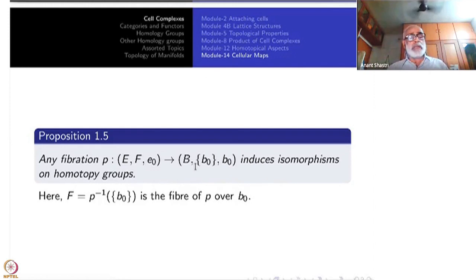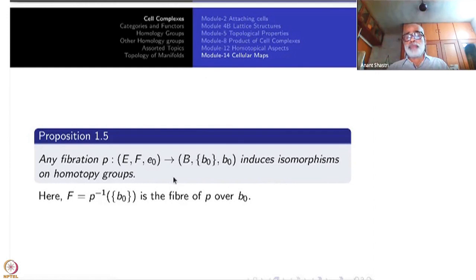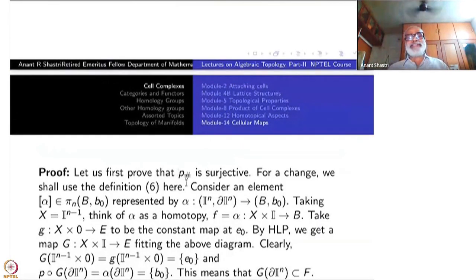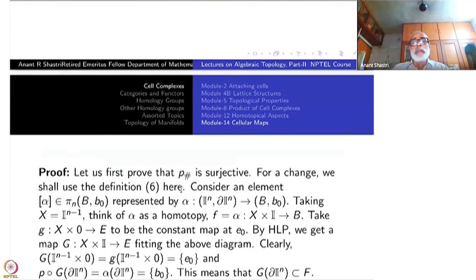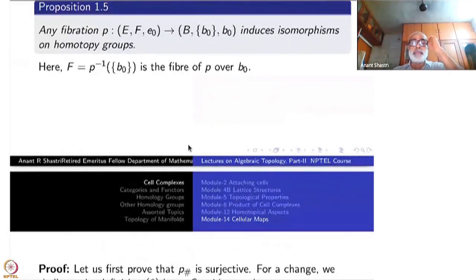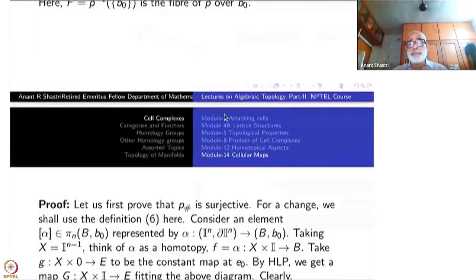Using this result combined with the homotopy exact sequence of the pair, we will get a very useful statement. Let us first prove this proposition. There are two parts: one is that p-hat is surjective and the other is that p-hat is injective. To prove surjectivity, we use definition 6, the simplest definition for the homotopy groups.